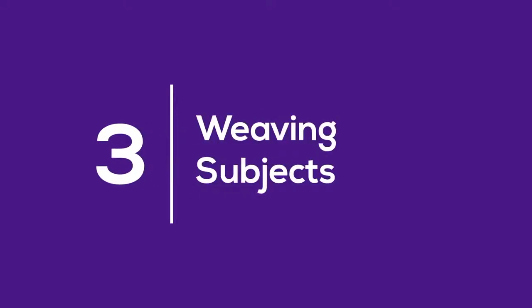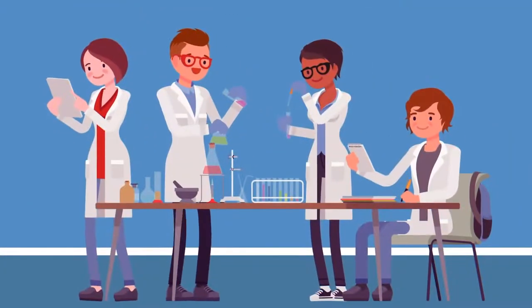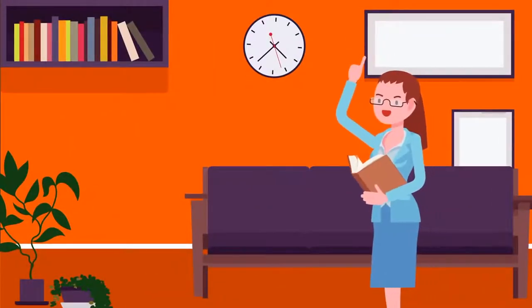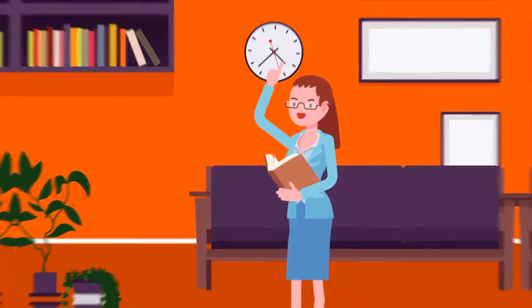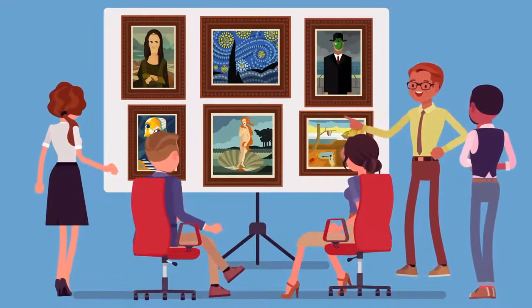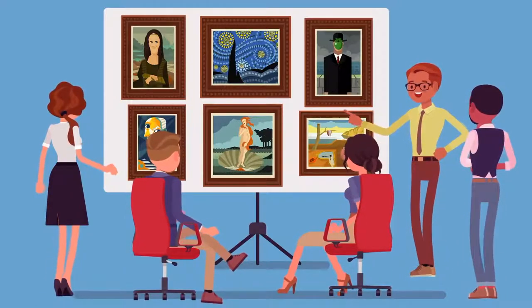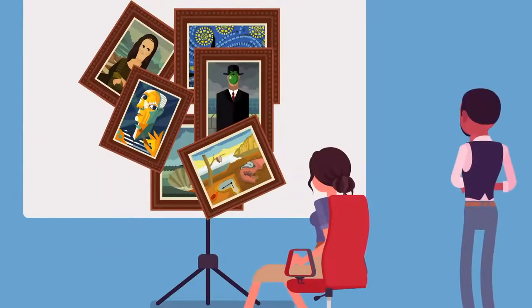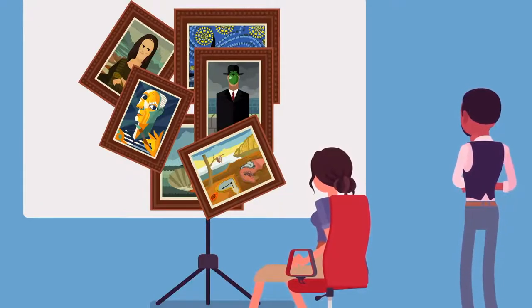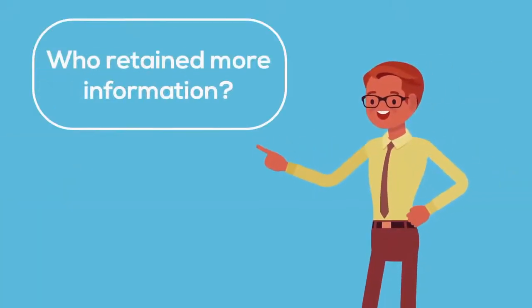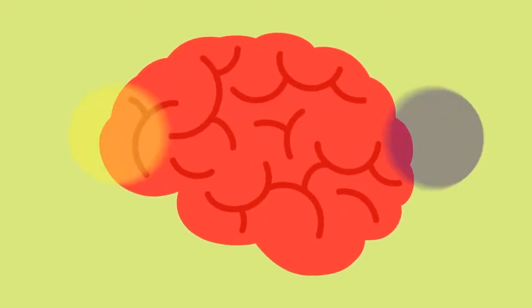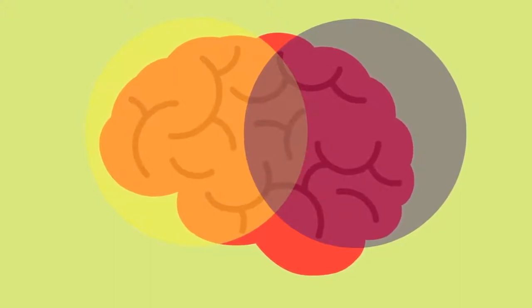Number three: Weaving Subjects. In 2008, a group of researchers discovered something counterintuitive about learning. You'll learn something faster by studying something else. In this study, researchers asked people to identify certain artists based on six of their paintings. Half of the participants saw each artist's paintings in blocks, while the other half saw their paintings all scrambled together. Who do you think retained more information? The scrambled group performed significantly better. Why is that? Well, because interweaving different styles and subjects helps solidify new information in your memory.